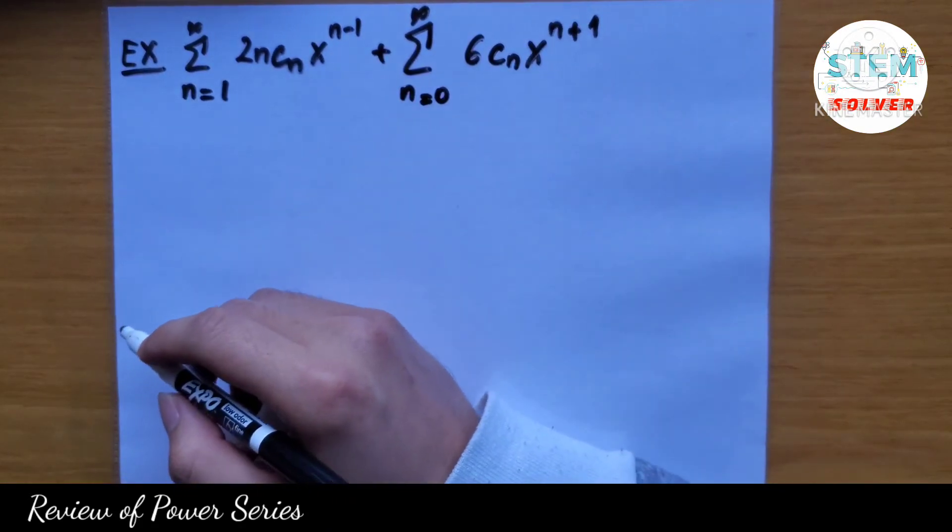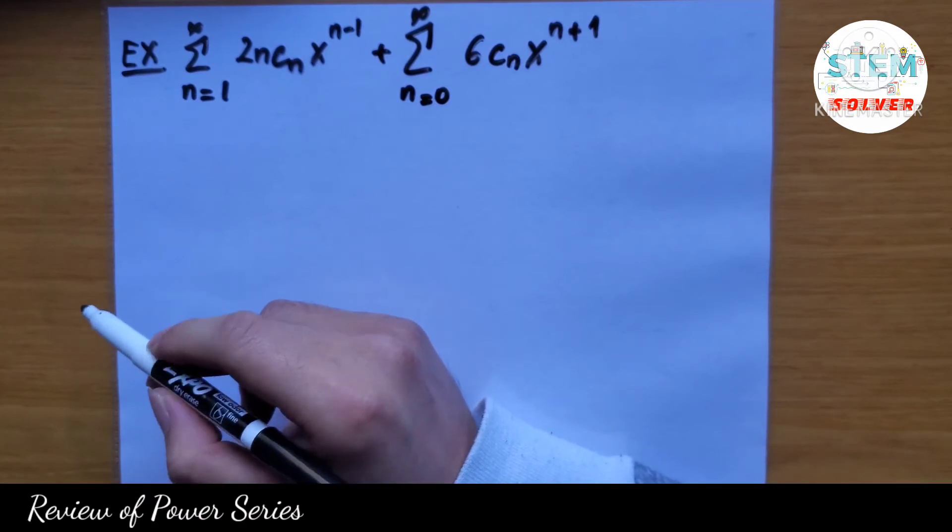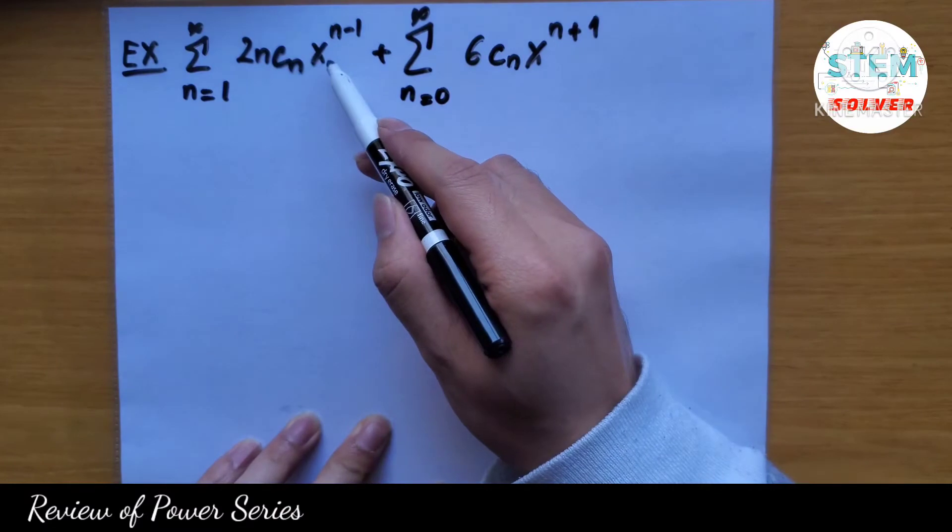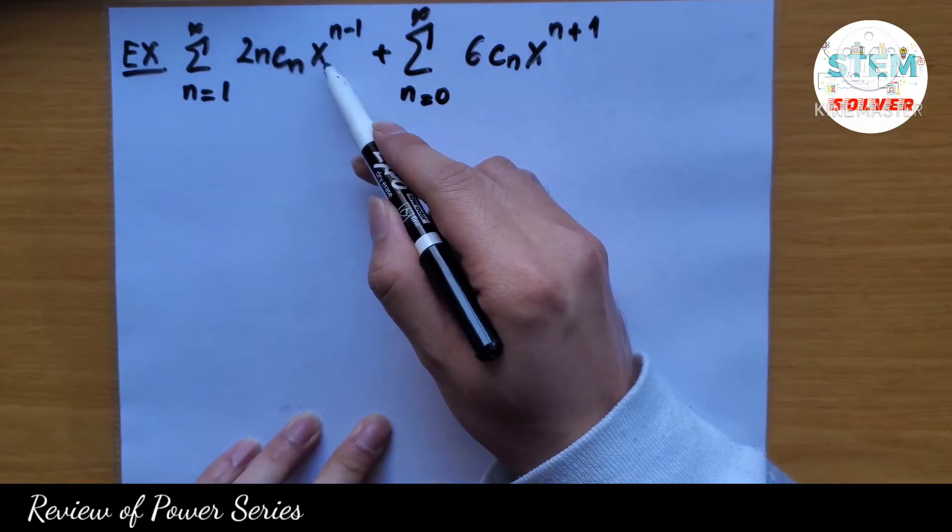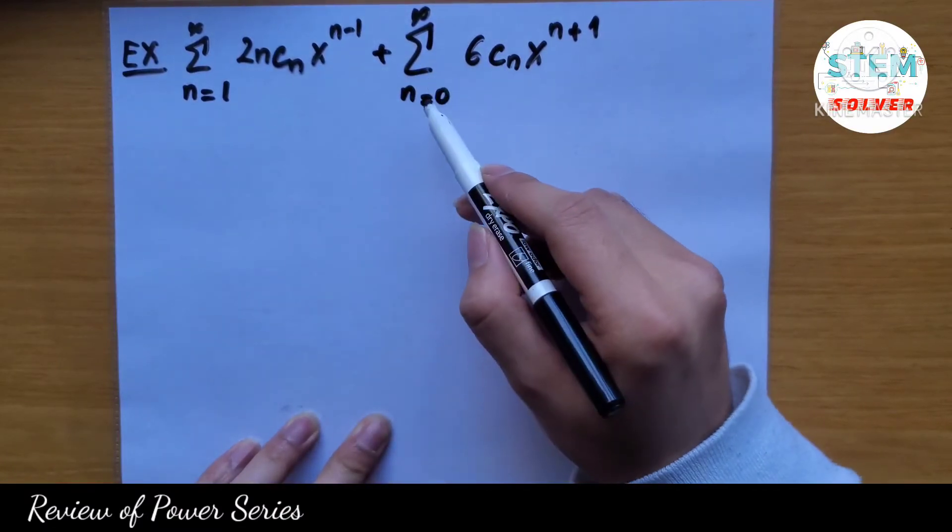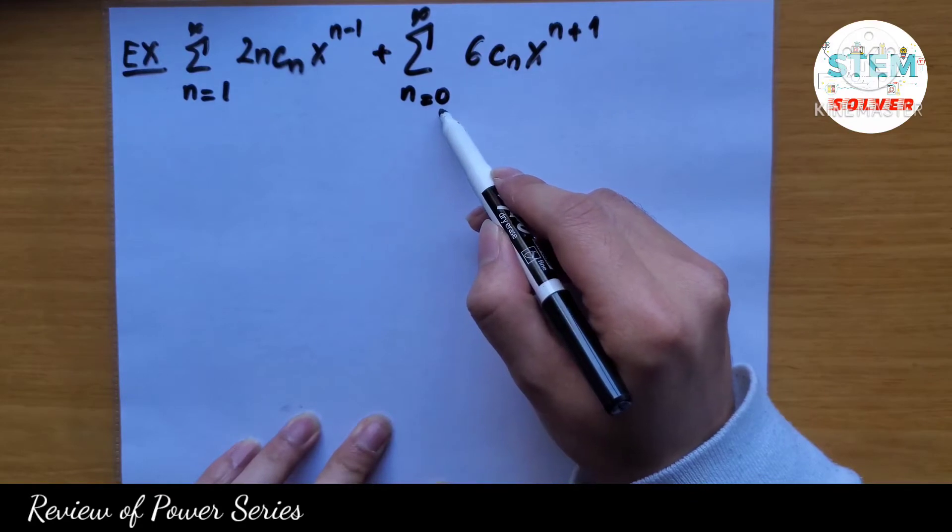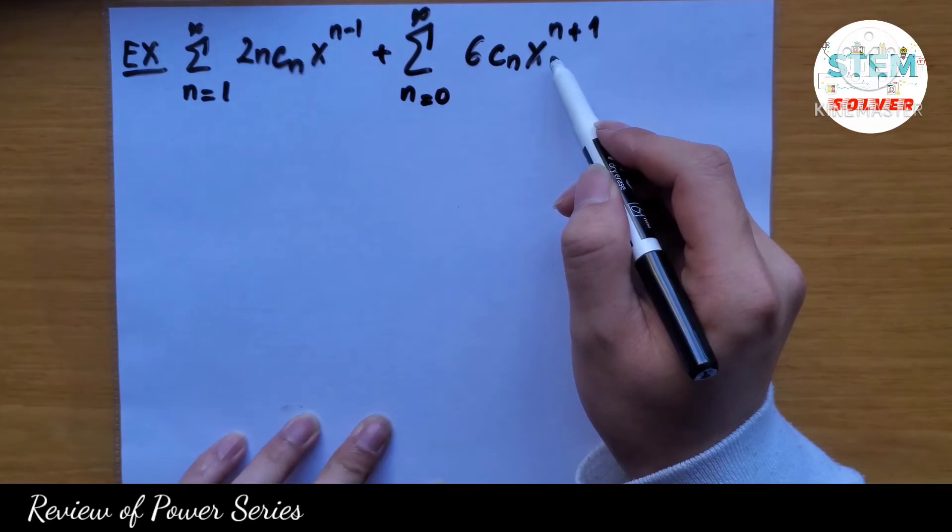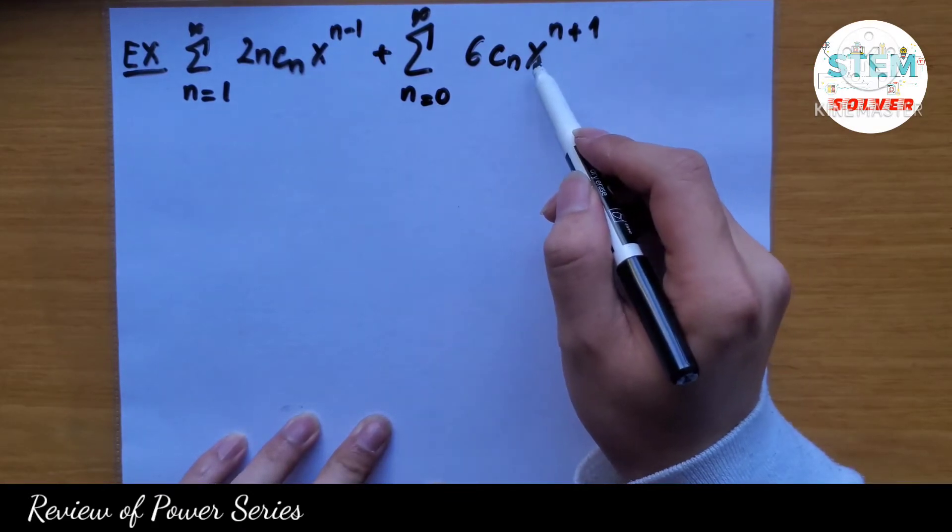First of all, let's take a look at the exponent. So if you plug in n equal 1 for this, you're going to get x to the 0, and if you plug in 0 for this one, you're going to get x to the 1, so x to the 1 is the highest exponent.